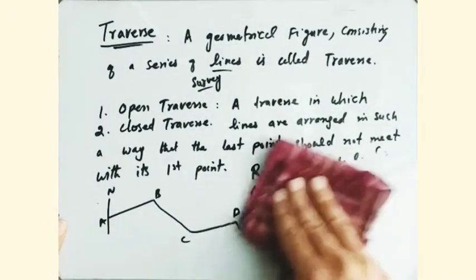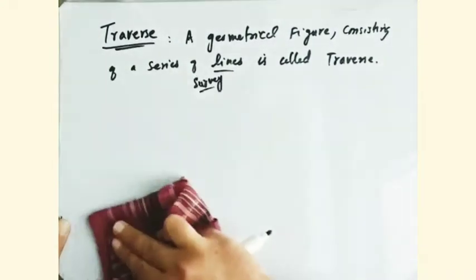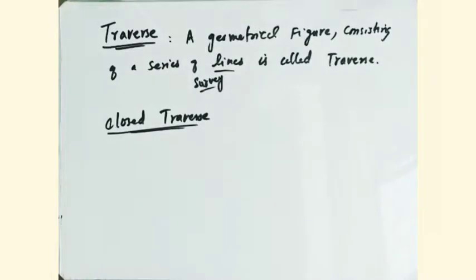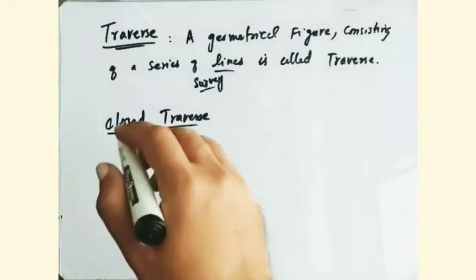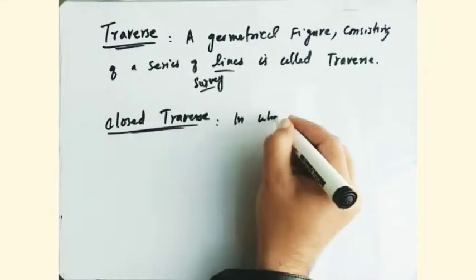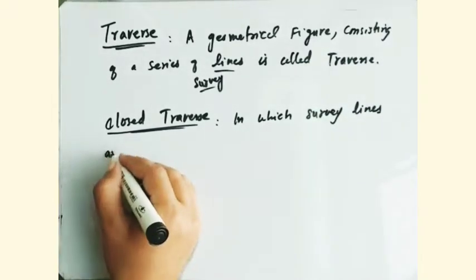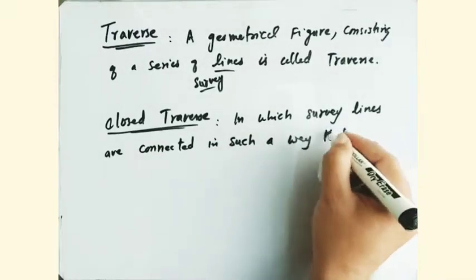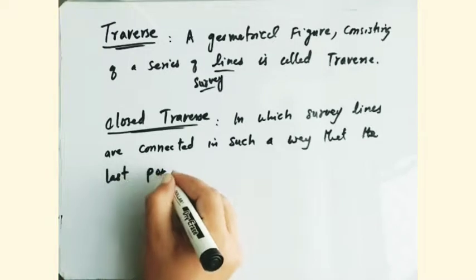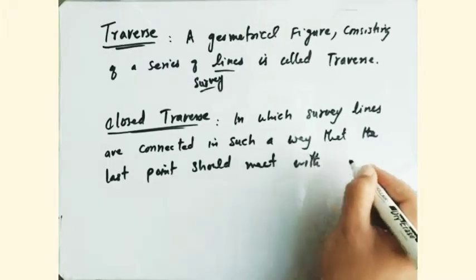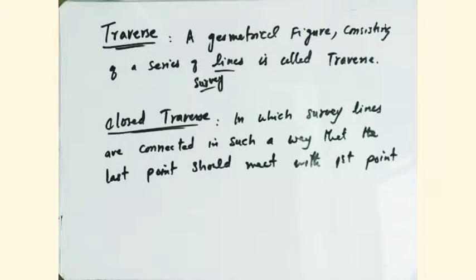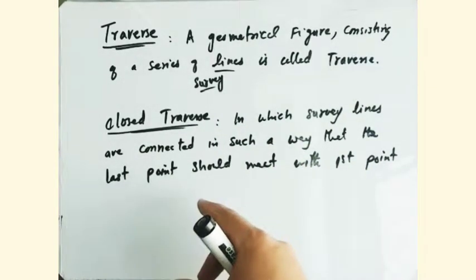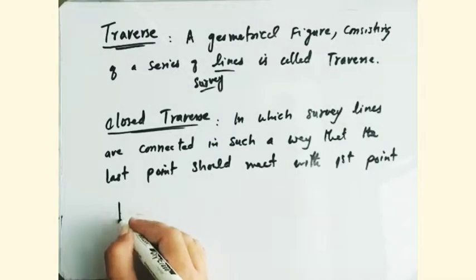Another type of Traverse is a closed Traverse. A closed Traverse is one in which the survey lines are connected in such a way that the last point meets with the first point. That means where you started, you come again to the first point to close the survey. So this type of Traverse is known as a closed Traverse.